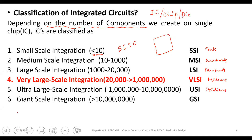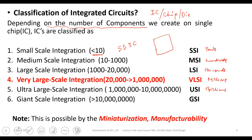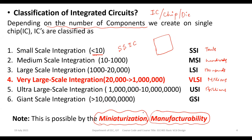The progression from small scale to giga scale integration is mainly due to miniaturization of devices and manufacturability. Miniaturization means reducing the dimensions of transistors. For example, considering only the length of a transistor — there is a source and a drain — miniaturization means reducing that length from L1 to a much smaller L2.